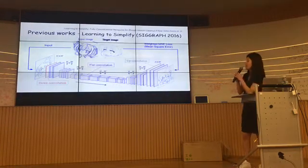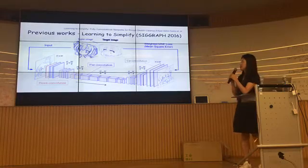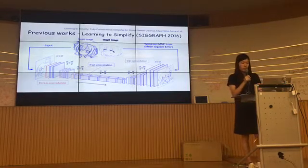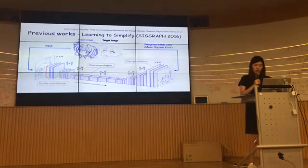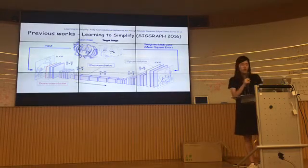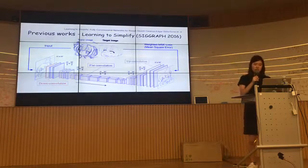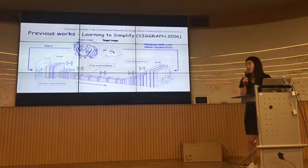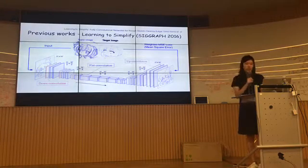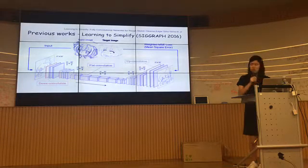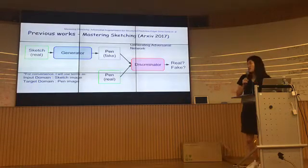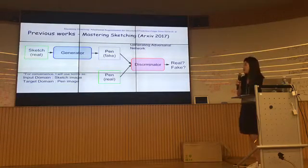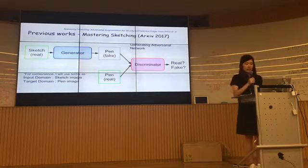Now I'll talk about some previous work. This one was published at SIGGRAPH 2016. They use a fully convolutional network with input sketch data and their ground truth target image, training in a supervised manner. They later upgraded their paper called Mastering Sketch, which was archived this year.